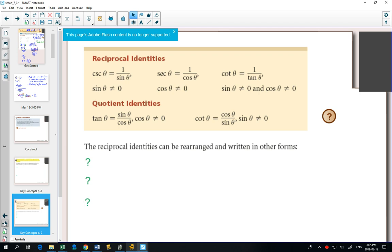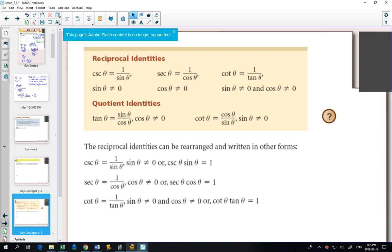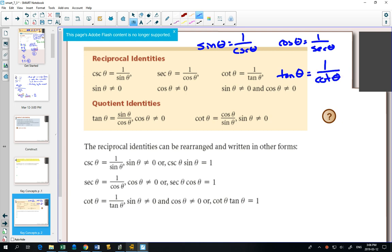For example, you could rearrange some of these ones, and you could say that I know that cosecant times sine is always equal to 1. I know that secant times cos is always equal to 1, and cotangent times tangent is equal to 1. You might also want to write for these ones, if you know cosecant is 1 over sine, then you know that sine is 1 over cosecant, and cos is 1 over secant, and tangent is 1 over cotangent.